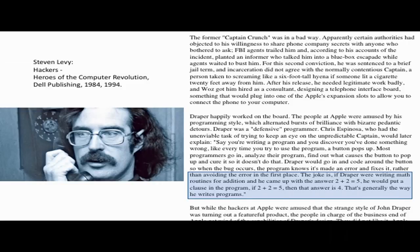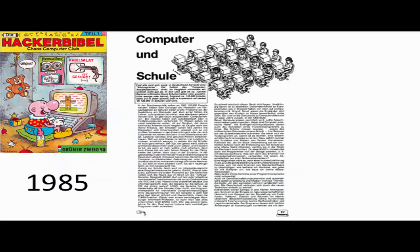John Draper is also known for writing software. He produced one of the early word processors called EasyWriter that I actually used. There were reports on the prolific programming style that Draper practiced. The joke is: if Draper were writing math routines for addition and got the answer 2 plus 2 equals 5, he would put a clause in the program - if 2 plus 2 equals 5, then the answer is 4. And that's generally the way he writes programs. Who's seen programs like this? Where somebody adds clause after clause of special cases until the special cases encountered in the wild are all covered.